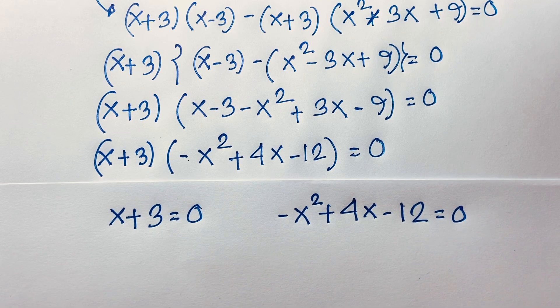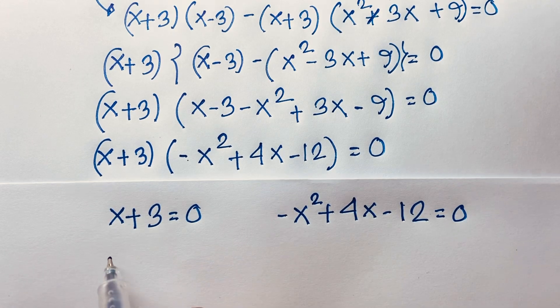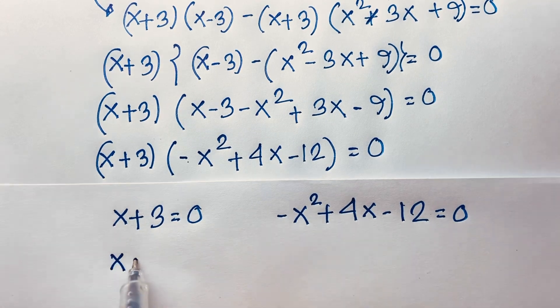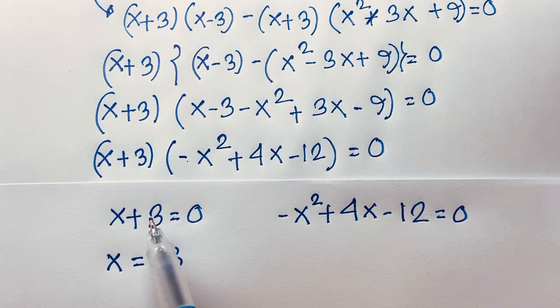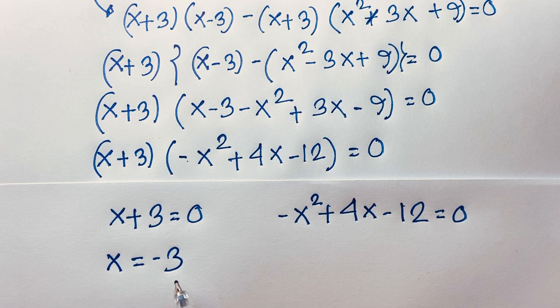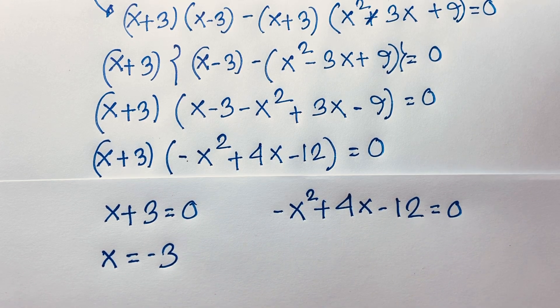From the factor (x+3) equals 0, we get x equals negative 3 as one real solution.